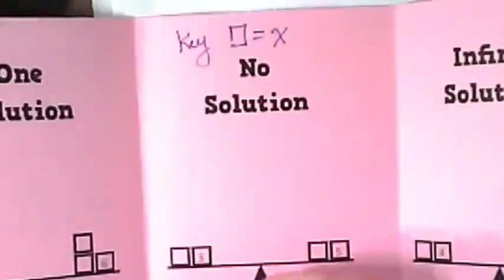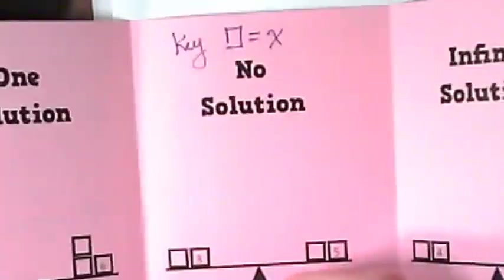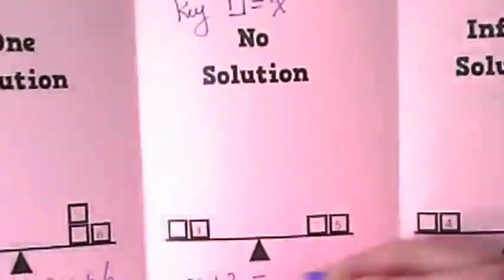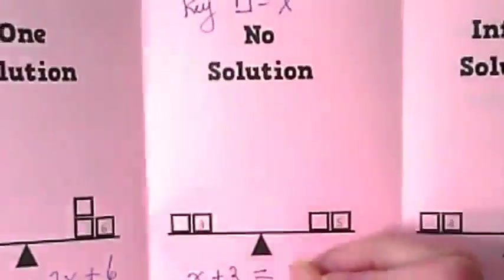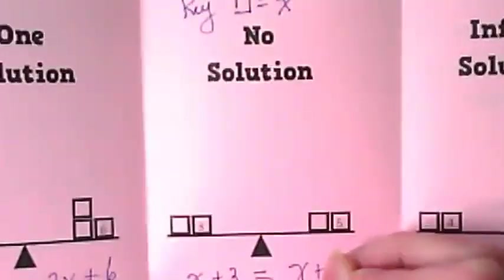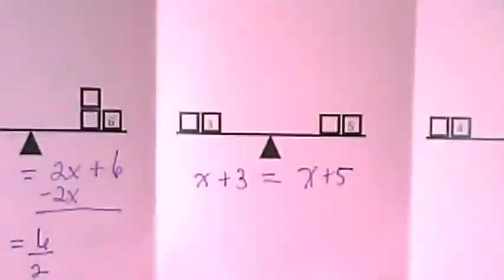How would we write this? X plus 3 is equal to? X plus 5. X plus 5.